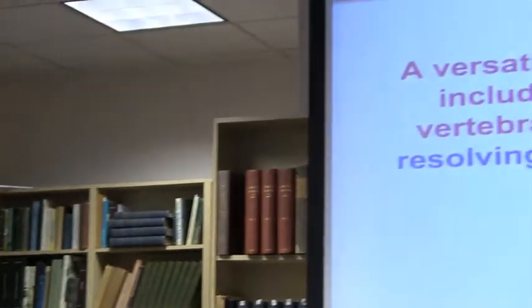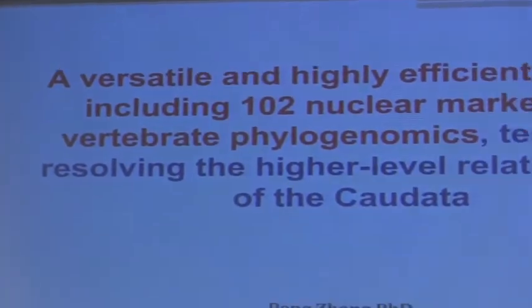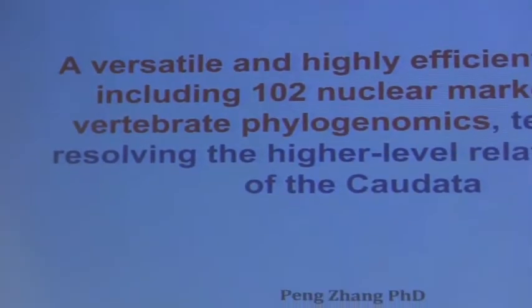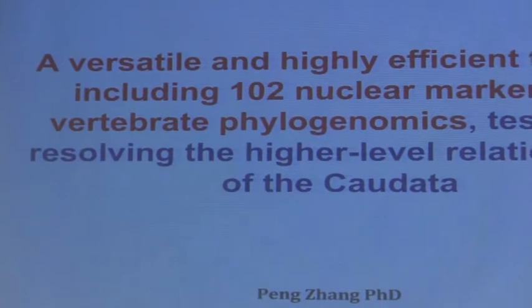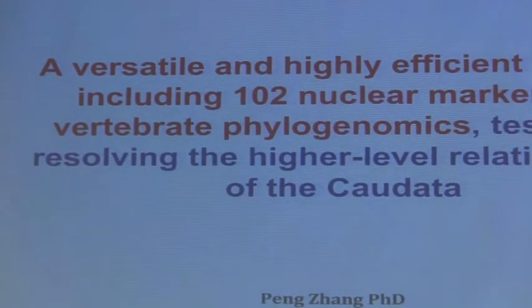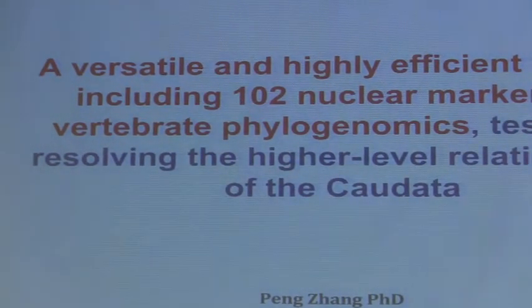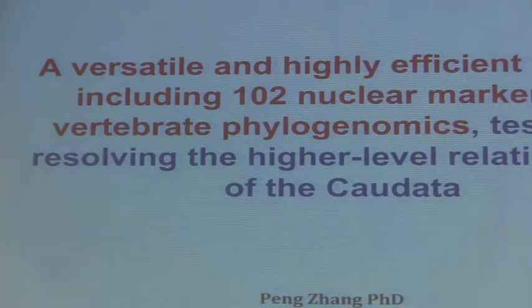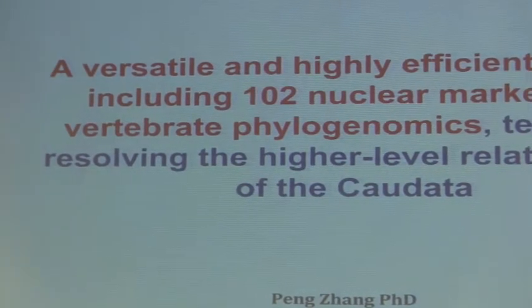The paper he's going to give us today just appeared online in MBE. He's going to tell us about a versatile and highly efficient toolkit including 102 nuclear markers and show how it's useful in vertebrate phylogenetics with an illustration from salamander higher classification. So Peng, we're delighted to have you back. Welcome.